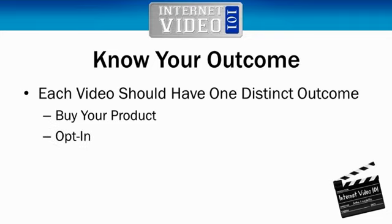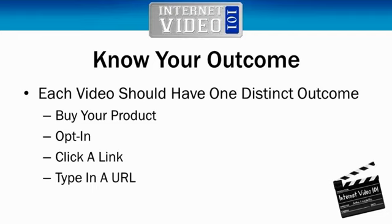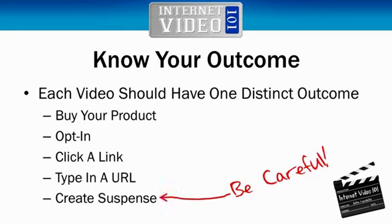Keep it very specific: one video, one outcome. Some examples: buy your product, opt into the mailing list, or click a link — a very simple outcome. You might even want to get them to type in a URL. My mentor last year released a product with a 45-minute sales video, and at the end there wasn't even a link on the page to click — he told people to type in a URL and had a phenomenal conversion rate. So don't discount that approach. Another outcome could be creating suspense, a cliffhanger, where people are on the edge of their seat asking what happens next.